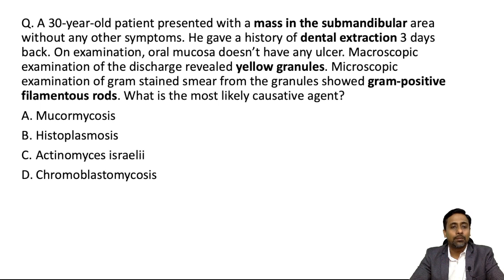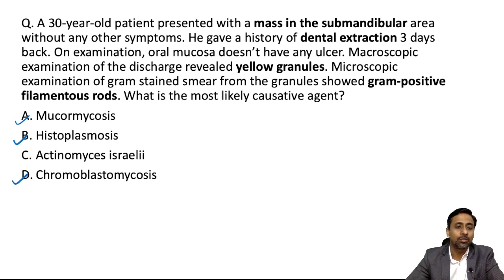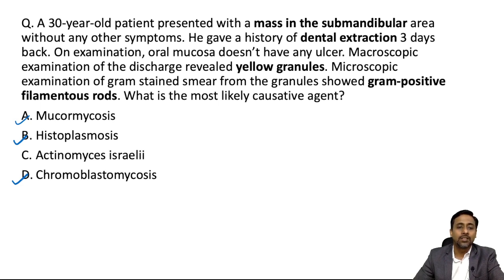Based on this information we have to solve the question. Even if you don't know much about the disease, you can solve it on the basis of the last feature: gram positive filamentous rod. Looking at the options — mucormycosis, histoplasmosis, and chromoblastomycosis — these three are fungal infections caused by Mucor, Histoplasma, and a group of fungi respectively. The only option that is a gram positive filamentous rod or bacterium is Actinomyces israelii.